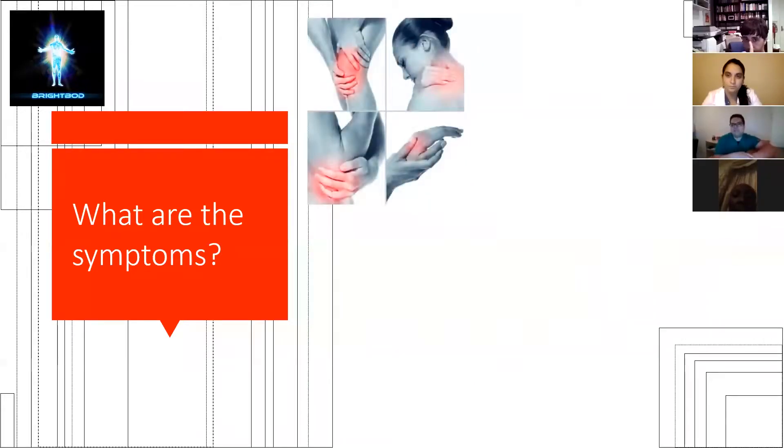Of course, pain is the number one symptom. It can be in one or more joints. Basically, the joints that are affected the most are the ones that we use the most. So it's very common for patients with osteoarthritis to go to the doctor complaining first of pain in the dominant side, so basically only the right knee is hurting or the right wrist or the elbow.